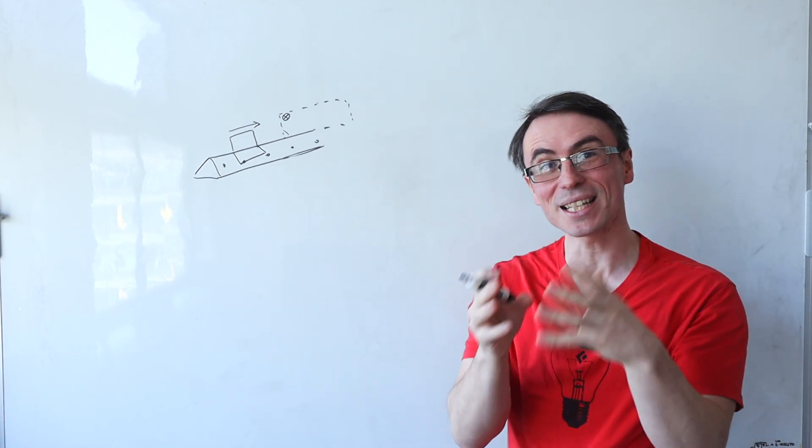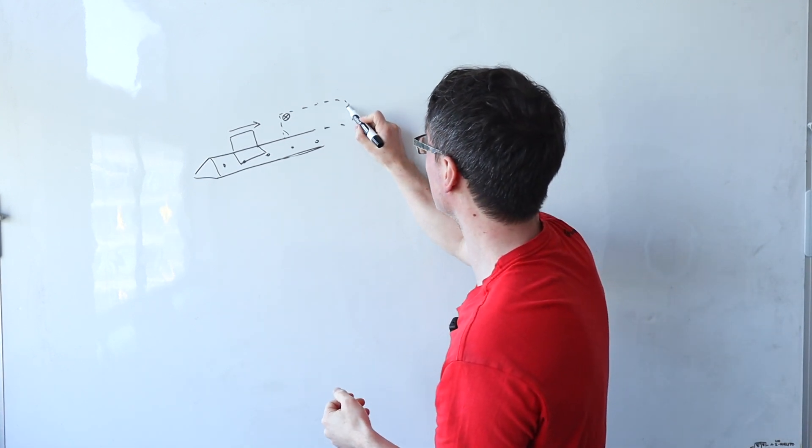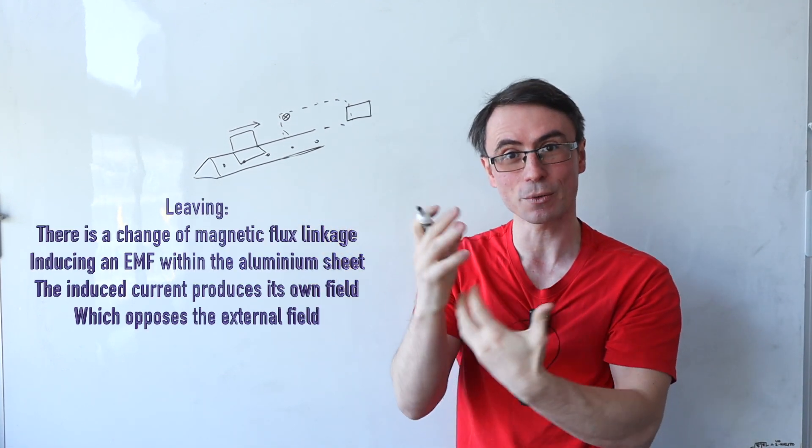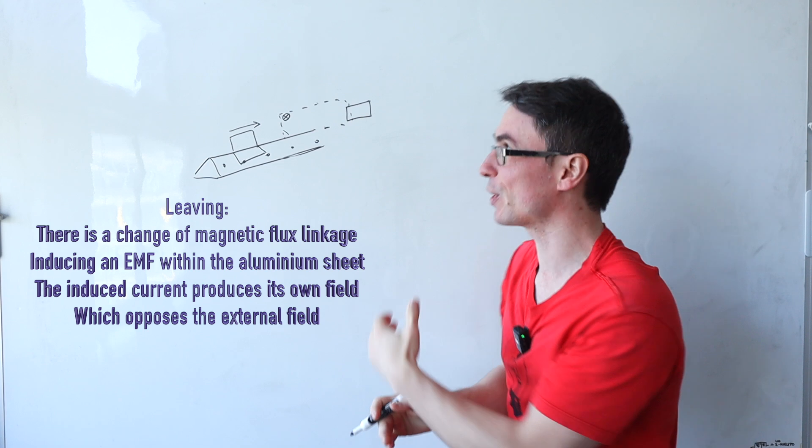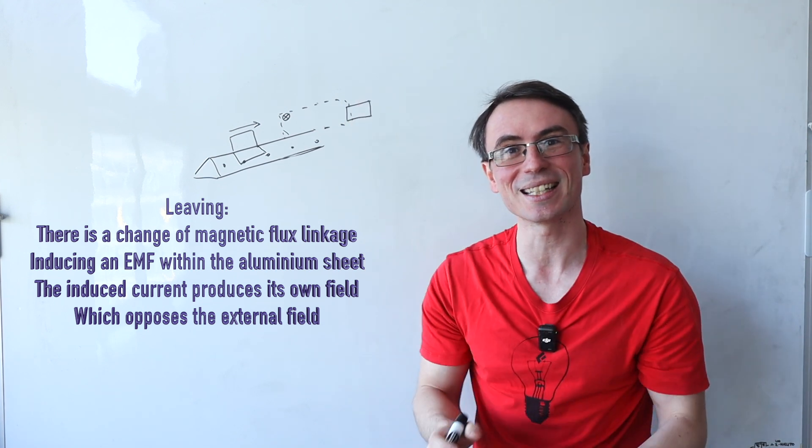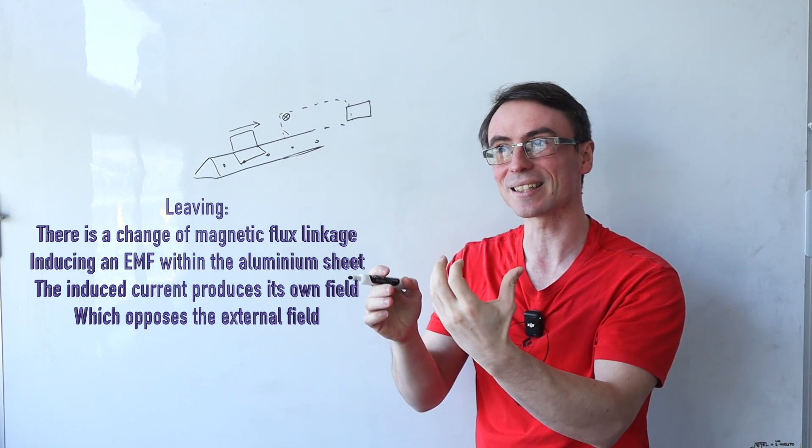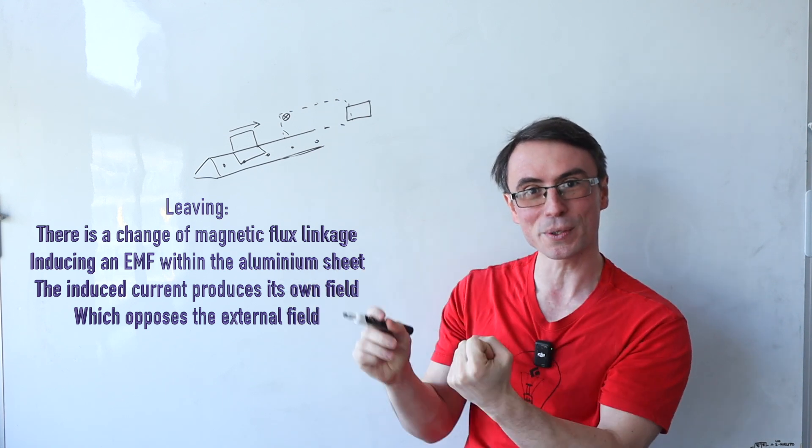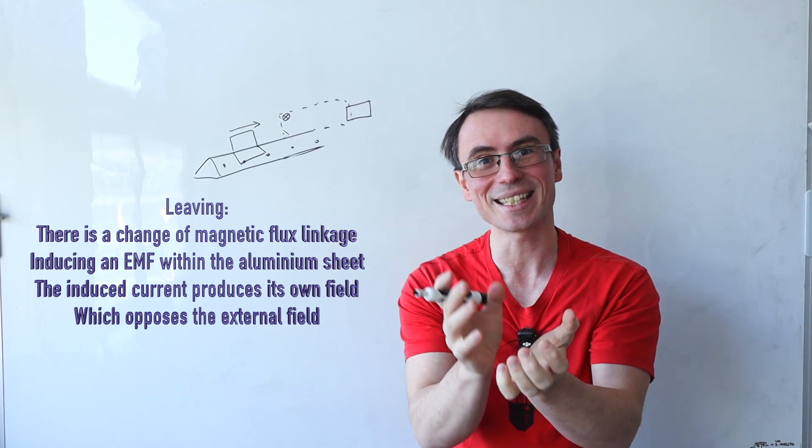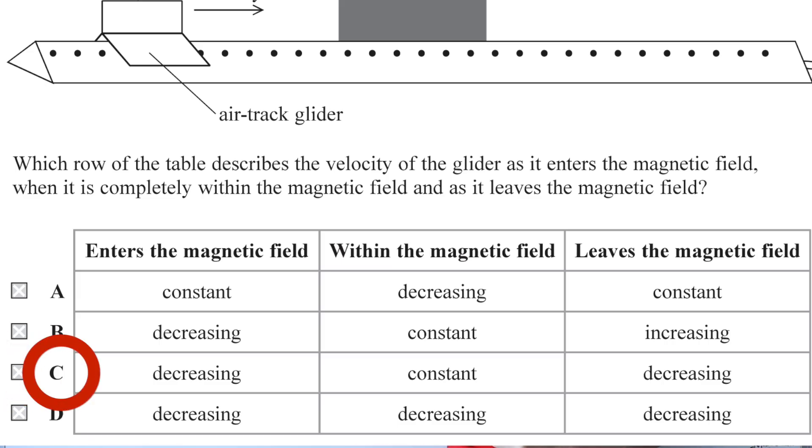Very interestingly, as it is leaving, the whole process will actually appear again, because when it's leaving, there's once again a rate of change of magnetic flux linkage. There is once again an induced EMF within the glider, and once again that field from the induced EMF will oppose the external one, meaning that the glider will slow down yet again. And this right here is the correct answer.